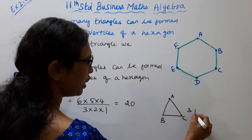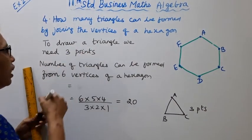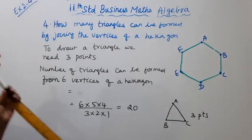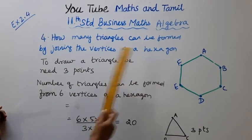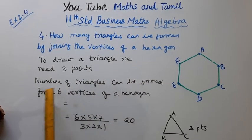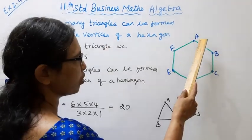To draw a triangle we need three points. How many triangles can be formed by joining the vertices of a hexagon? Number of triangles can be formed from six vertices of a hexagon - hexagon has six points.